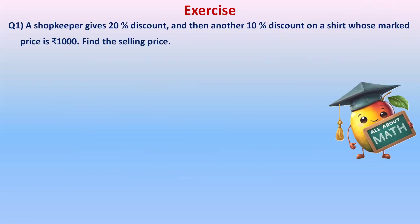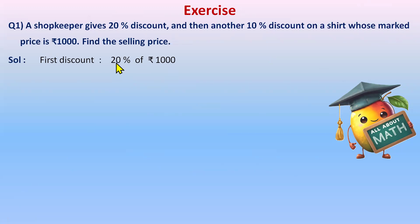The question: a shopkeeper gives 20% discount and then another 10% discount on a shirt whose marked price is 1000 rupees. We need to find the selling price. The 20% discount is on the marked price of 1000 rupees, while the 10% discount is not on this marked price. For the first discount: 20% of 1000 = 20/100 × 1000 = 200 rupees.